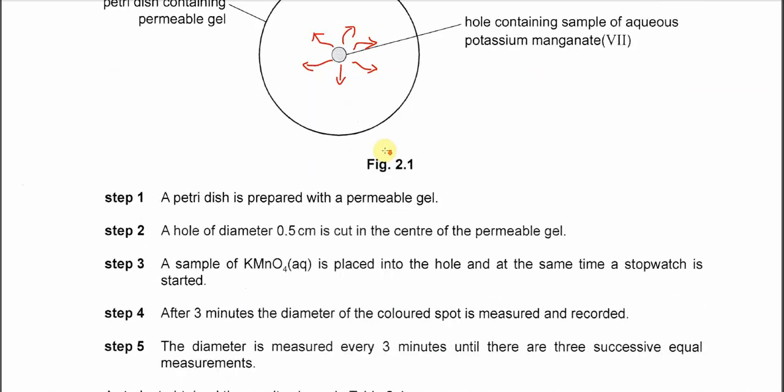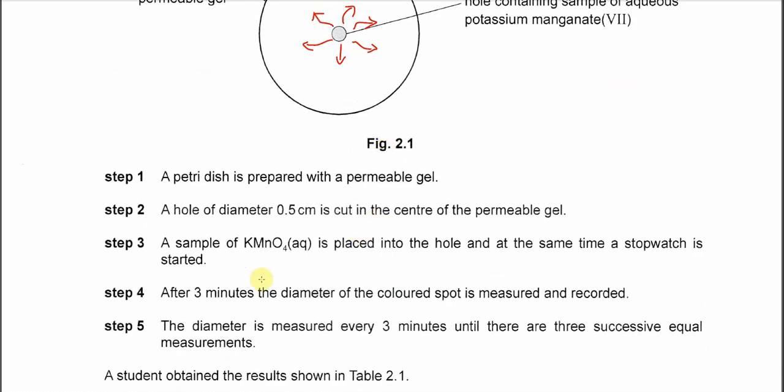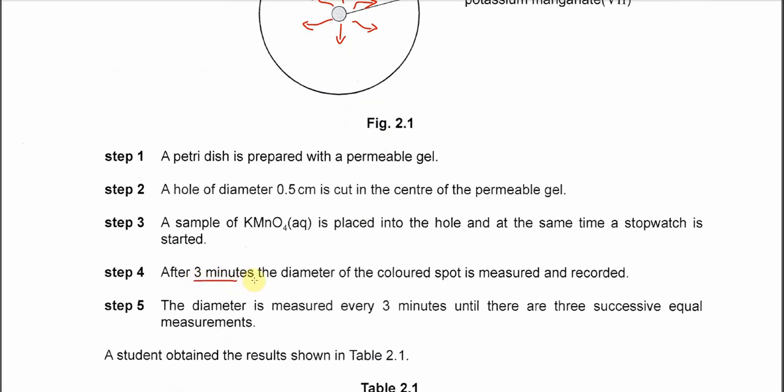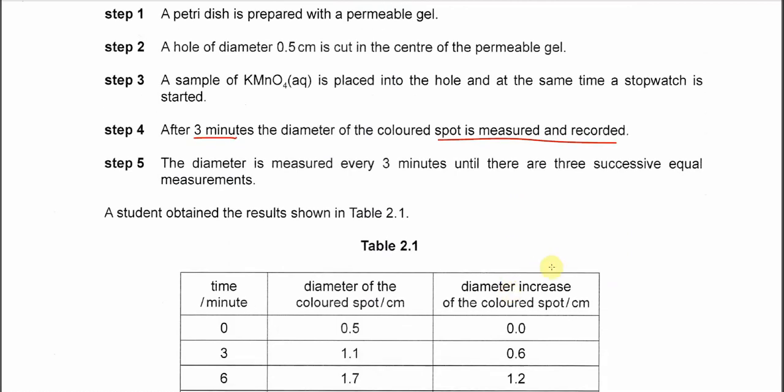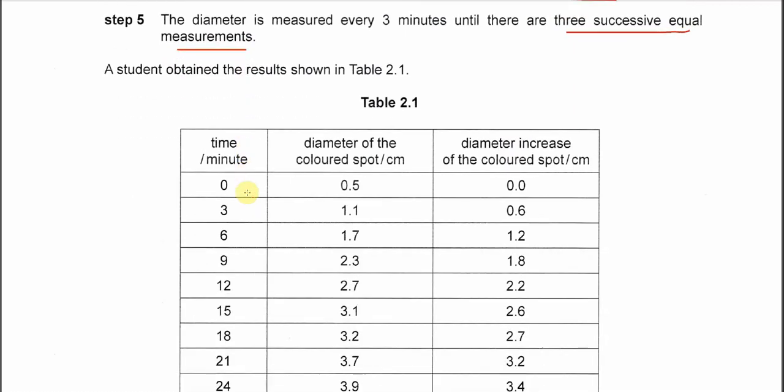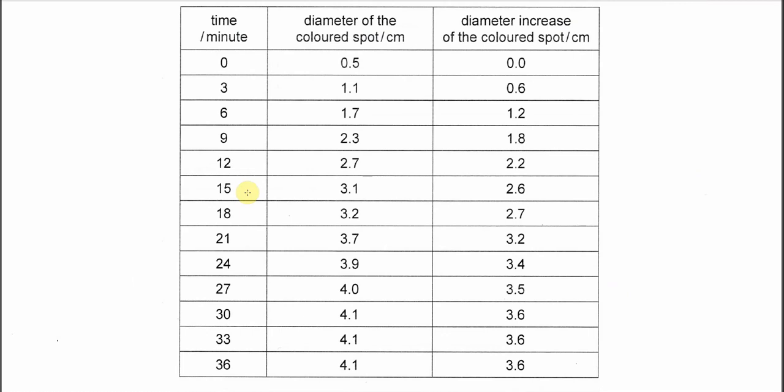The time that's used is 3 minutes interval, so 3 minutes, 6 minutes, 9 minutes, 12 minutes, and so on. The diameter of the spot is measured and recorded. After that, when it reached three successive equal measurements, then it stopped. In Table 2.1, as you can see, after it gets this 4.1 cm, the three equal successive values, the experiment stopped.